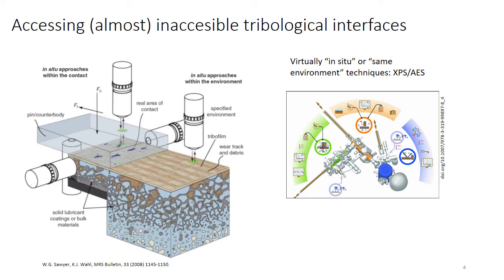Among these techniques, it should be mentioned the virtually in-situ environment technique developed in Lyon, in the laboratory of tribology and system dynamics, which includes both a tribological chamber and a characterization chamber. The sample can be brought into vacuum and then transferred to the characterization chamber. This is not really in-situ measurement since the sample must be transferred, but it can be done without exposing the sample to atmosphere.